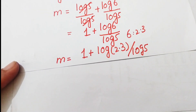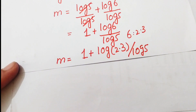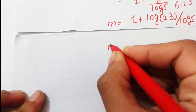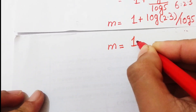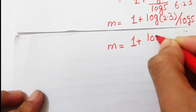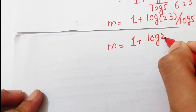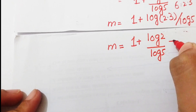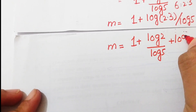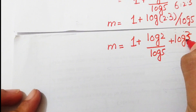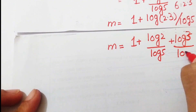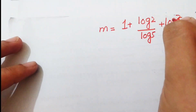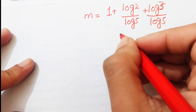Now again we apply the property of log, and the given form can be written as m equals 1 plus log2 over log5 plus log3 over log5.